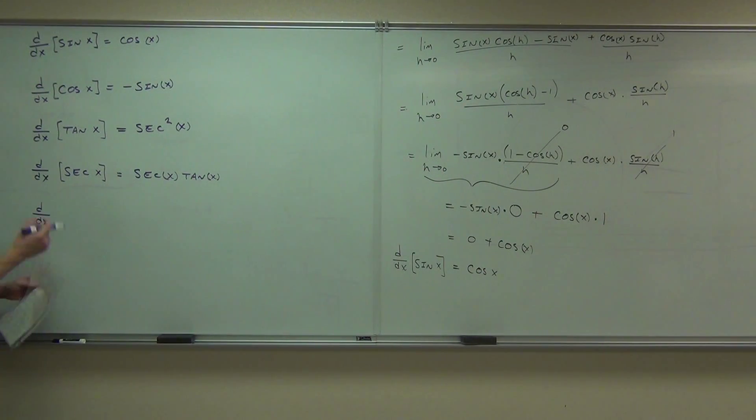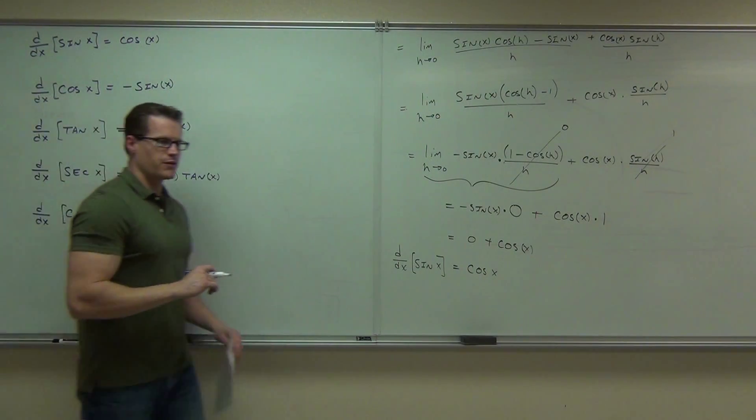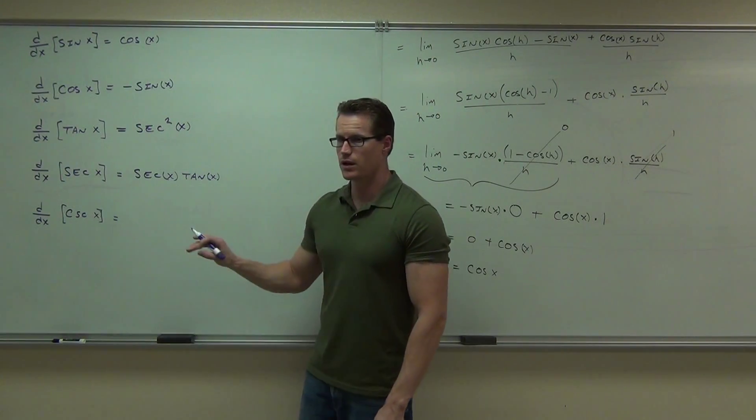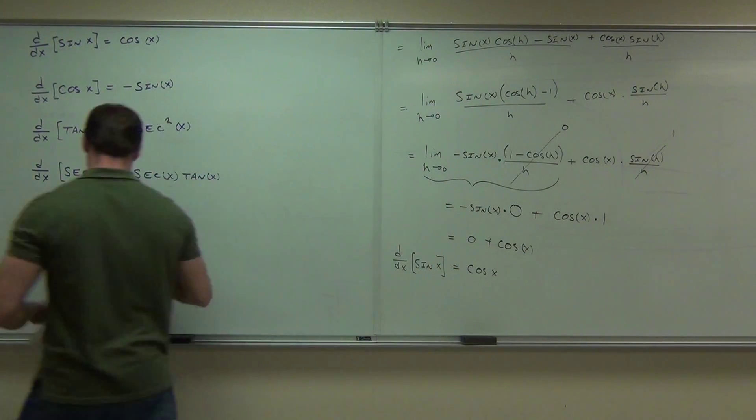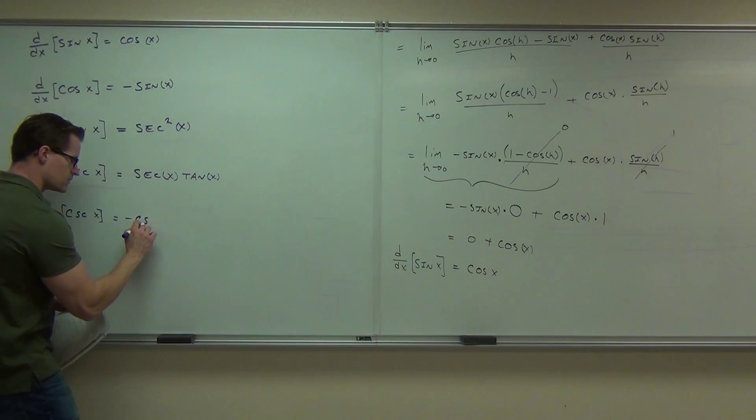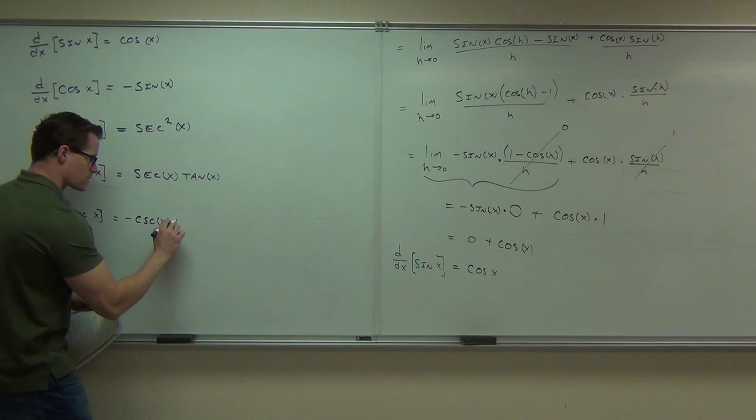If you did, what's the next one I want to do? Cosecant. Derivative of cosecant. Well, cosecant is 1 over sine, so if you did the quotient rule again, you should be able to find out what cosecant is. This is negative cosecant cotangent.